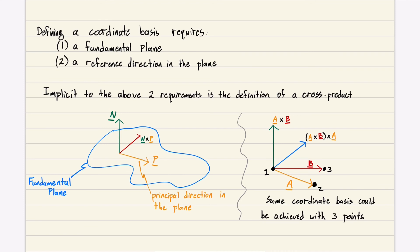We could also define our coordinate basis with three points: one, two, and three. We draw a vector from one to two, and we draw a vector from one to three. We cross A into B, and this defines our normal. Then we can do A cross B crossed into A, and that'll give us this direction. We just defined our three orthonormal unit basis from three points.